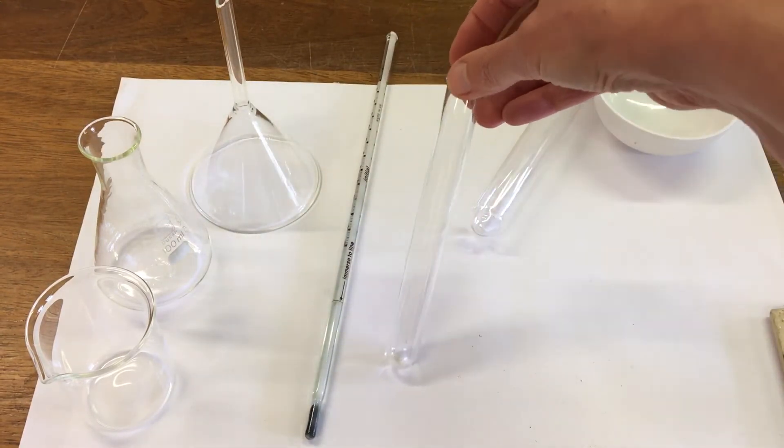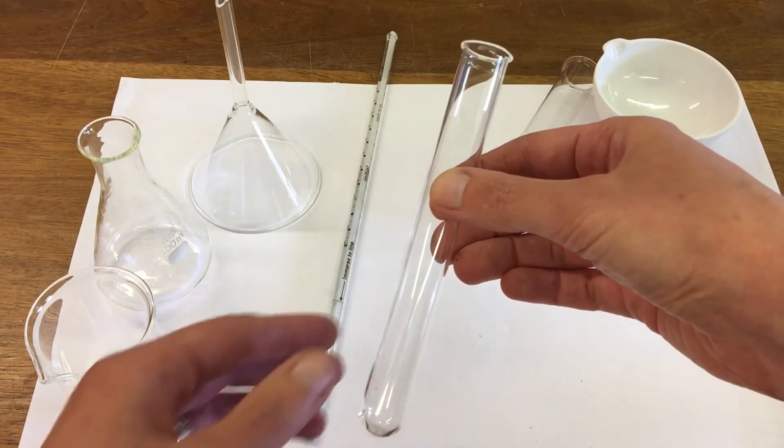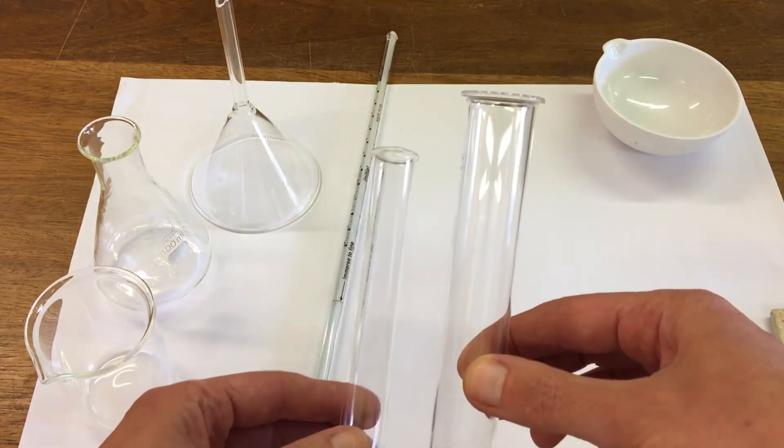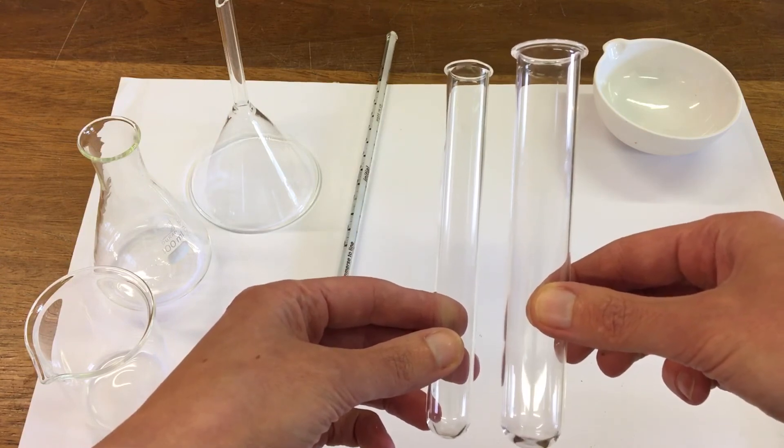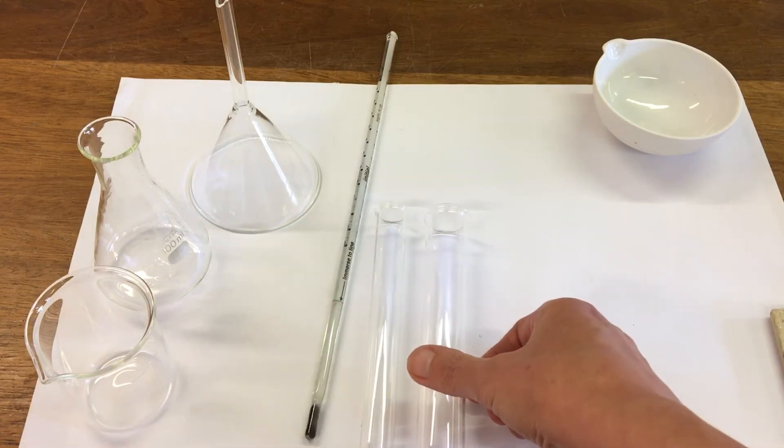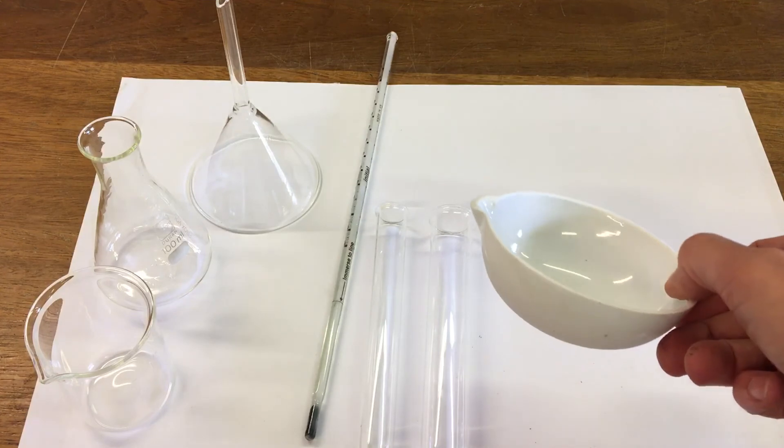This one is a test tube and this one is a boiling tube. So the boiling tube is slightly bigger than the test tube. And this one is an evaporating basin.